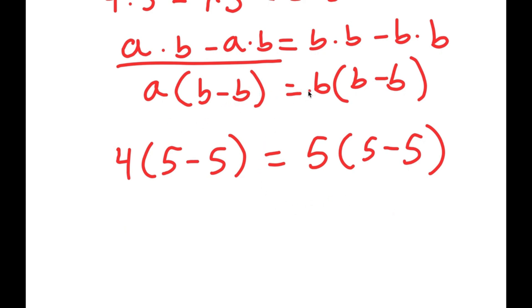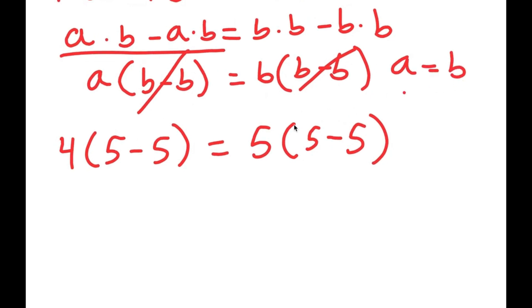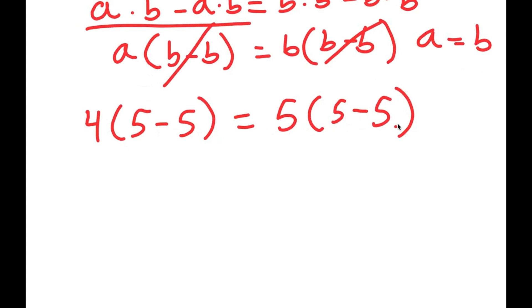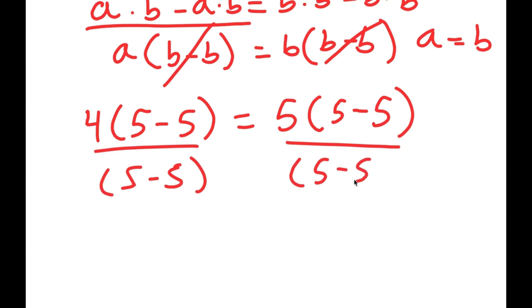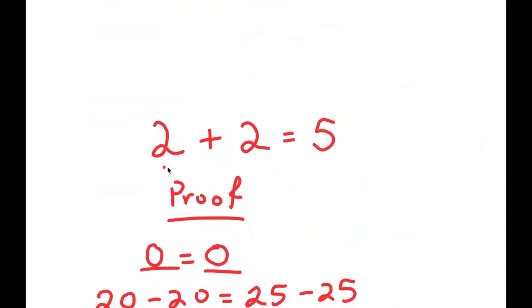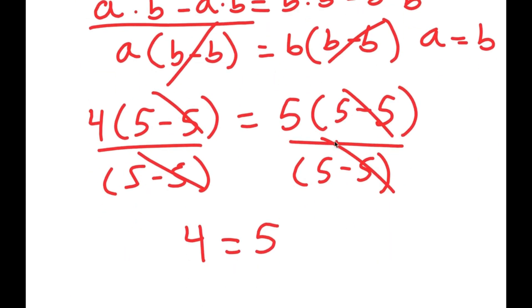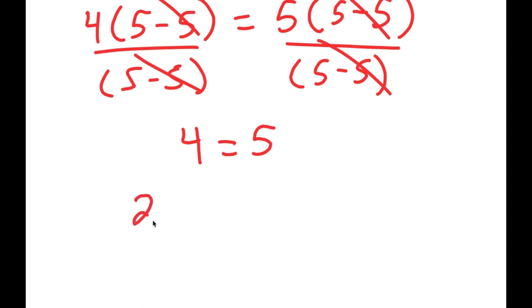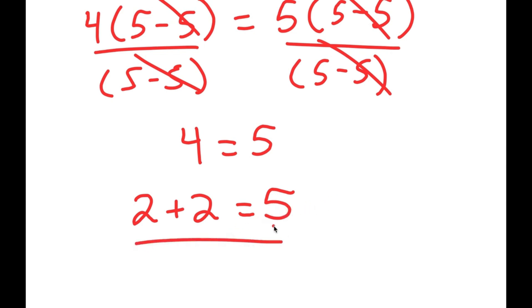If I have a times b minus b equals b times b minus b, I can divide both sides by b minus b, meaning a equals b. So I divide both sides by 5 minus 5. These cancel out and I'm left with 4 equals 5. Since 4 equals 2 plus 2, I get 2 plus 2 equals 5.